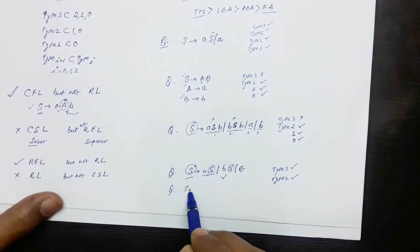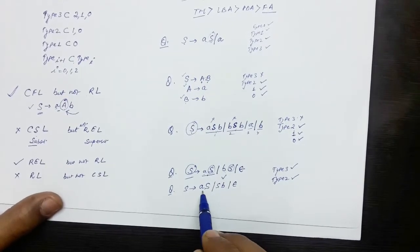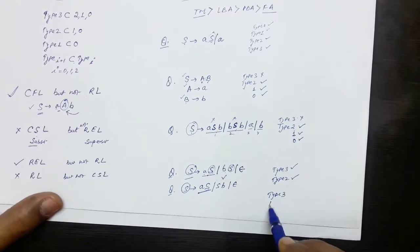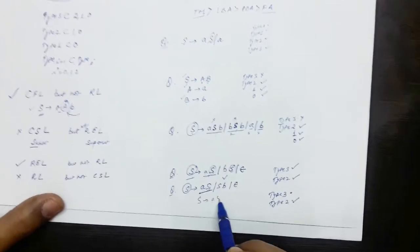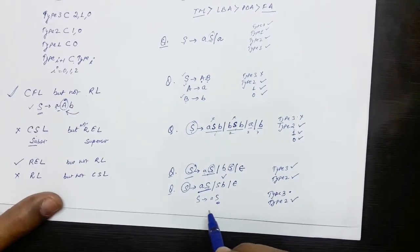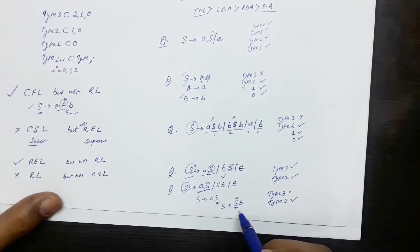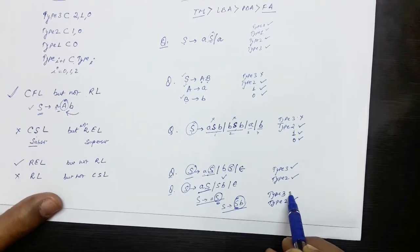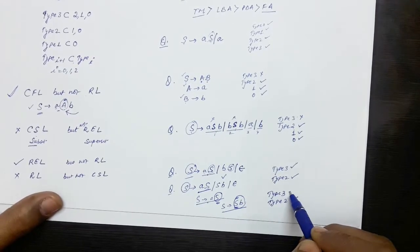Now consider the grammar: S produces AS, SB, and epsilon. On the left hand side we have one symbol, so obviously it is Type 2 or Type 3. We are checking if it is Type 3. For S produces AS, the non-terminal is appearing on the right — that is right linear. But for S produces SB, the non-terminal symbol is appearing on the left — that is left linear. If a grammar is both left linear and right linear, it cannot be Type 3; it must be either one or the other. So this grammar is not Type 3. It is Type 2.